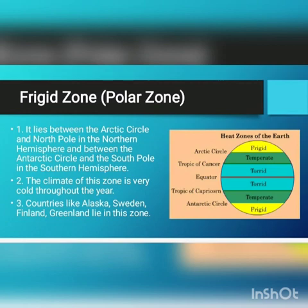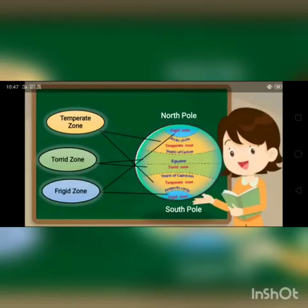Countries like Alaska, Sweden, Finland, and Greenland lie in this zone.